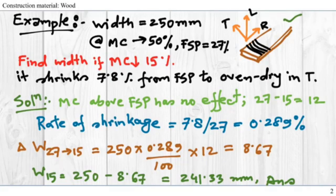Think of a problem where we just cut a wood plank which has a width of 250 millimeters. At that point the green moisture content is 50% and the FSP (fiber saturation point) is given as 27%.